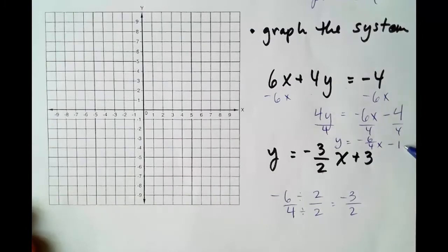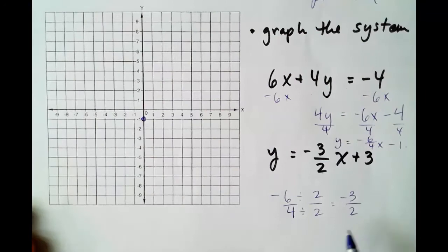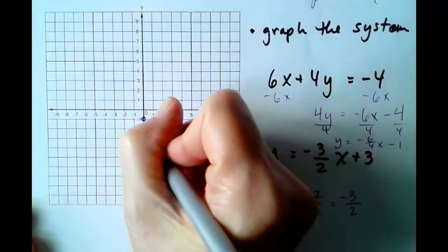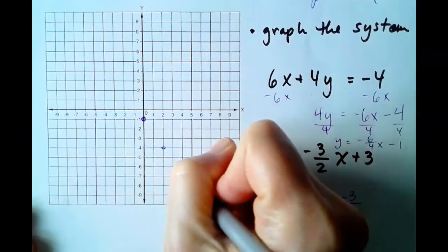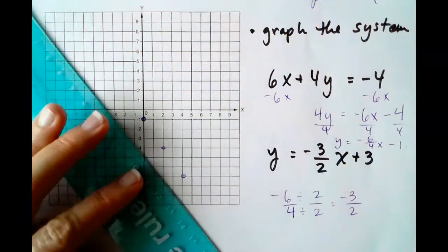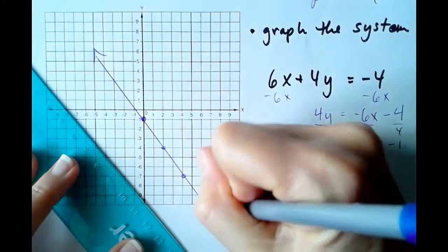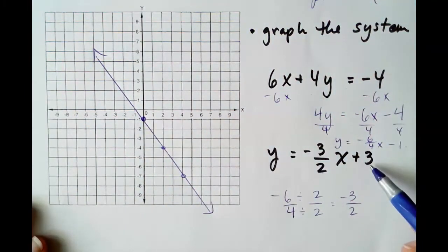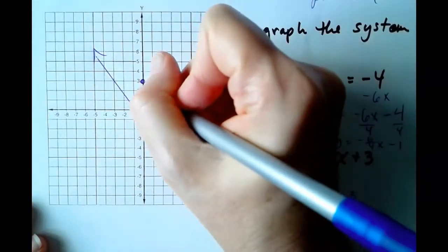This first line has a y-intercept at negative 1. The slope is negative 3 over 2, down 3, 1, 2, 3, forward 2, 1, 2, 3, forward 2. So here is our first line. And our second line has a y-intercept at 3 and a slope, again, of negative 3 over 2.